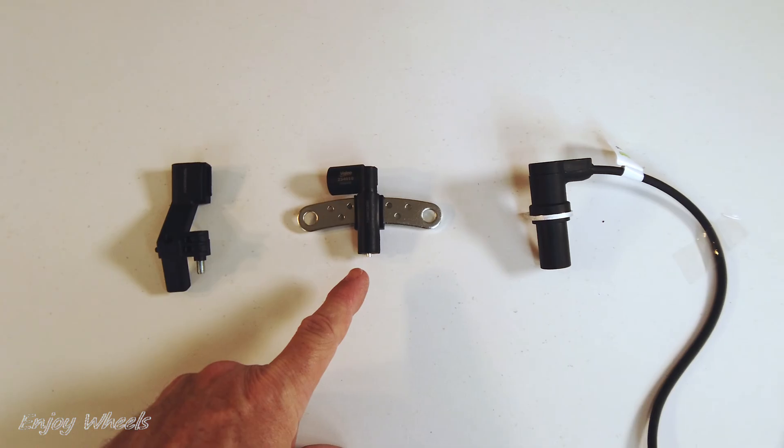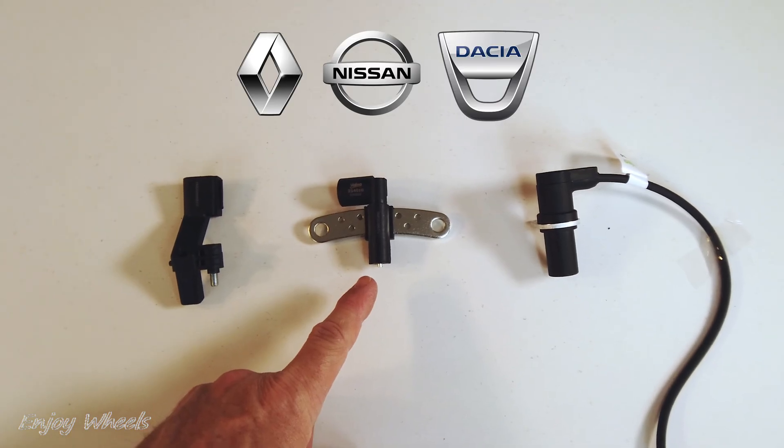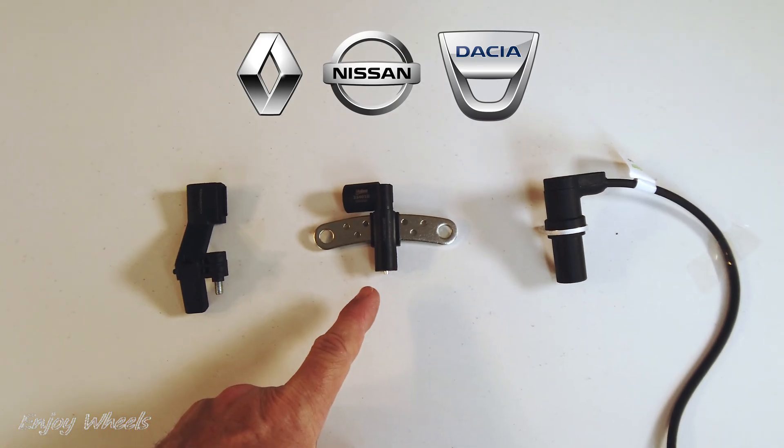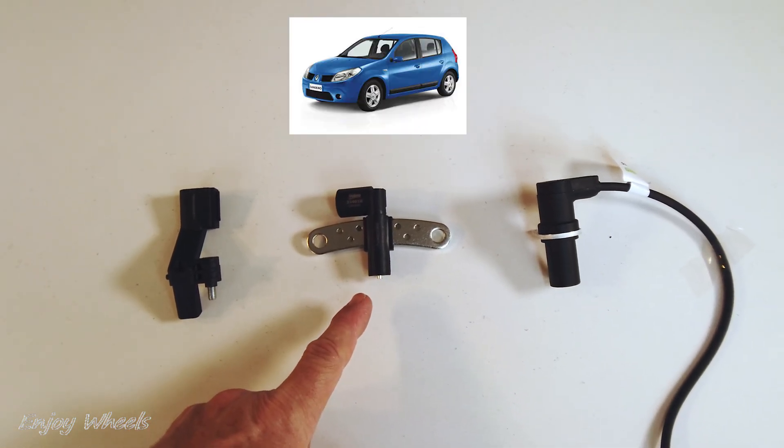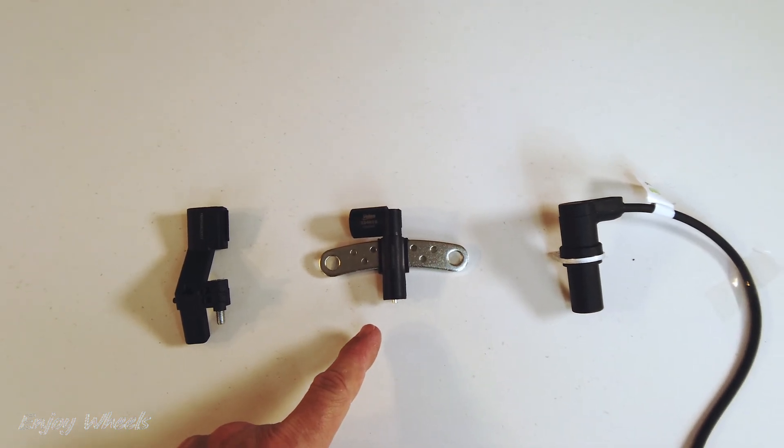The second sensor is also a TDC sensor, but from the Renault, Nissan, Dacia group. This sensor is present on a lot of models like the Clio, the Meganes, the Dacia Sandero and Duster and so on. And to work, this second sensor uses the inductive effect.